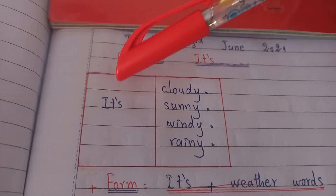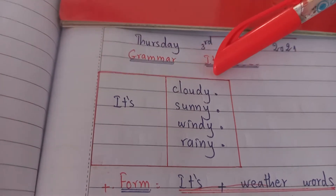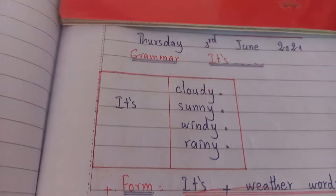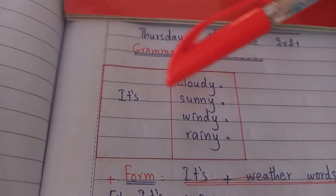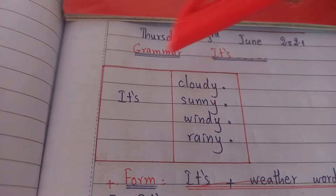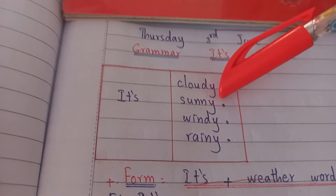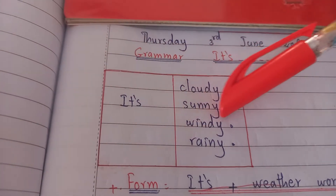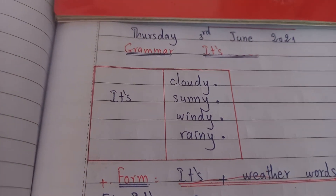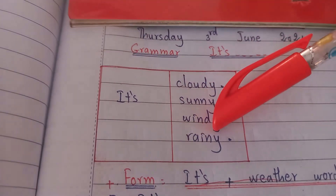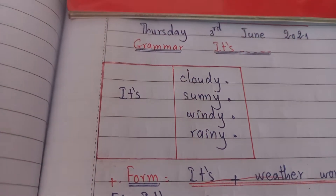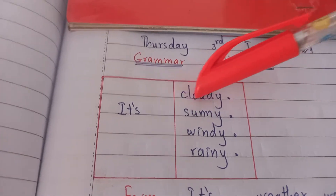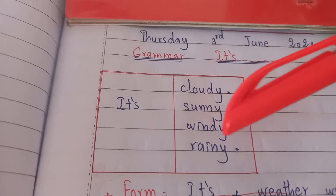Okay, look at the sentences all together. It's cloudy. It's sunny. It's windy. It's rainy. Okay, so all these words — cloudy, sunny, windy, rainy.